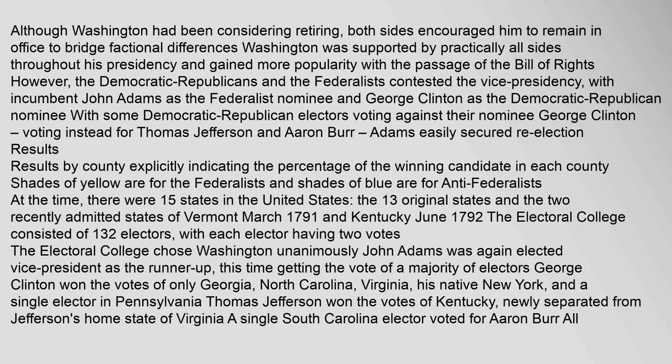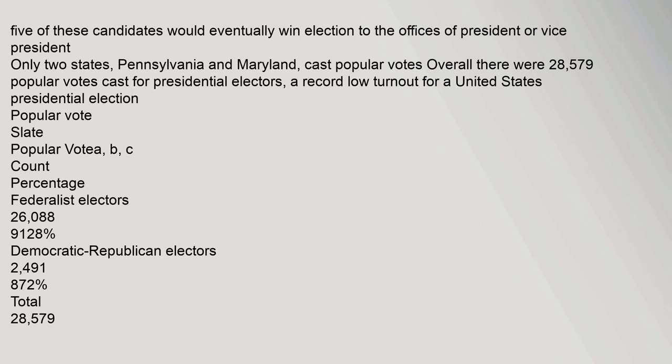Results by county indicate the percentage of the winning candidate in each county. Shades of yellow are for the Federalists and shades of blue are for Anti-Federalists at the time. There were fifteen states in the United States — the thirteen original states and the two recently admitted states of Vermont (March 1791) and Kentucky (June 1792). The Electoral College consisted of 132 electors, with each elector having two votes. The Electoral College chose Washington unanimously. John Adams was again elected Vice President as the runner-up, this time getting the vote of a majority of electors. George Clinton won the votes of only Georgia, North Carolina, Virginia, his native New York, and a single elector in Pennsylvania. Thomas Jefferson won the votes of Kentucky, and a single South Carolina elector voted for Aaron Burr. Only two states, Pennsylvania and Maryland, cast popular votes overall. There were 28,579 popular votes cast for presidential electors, a record low turnout for a United States presidential election.